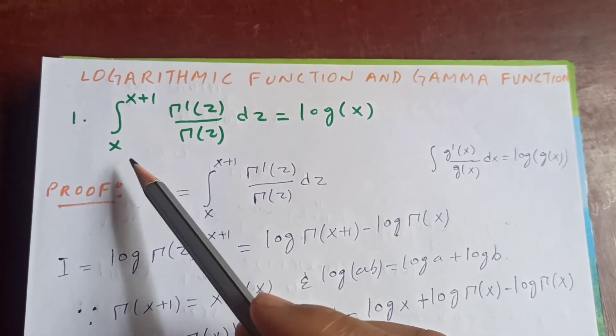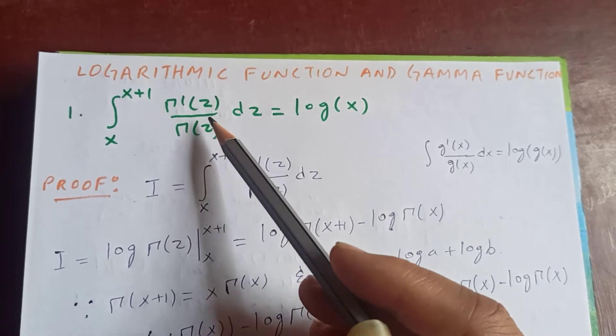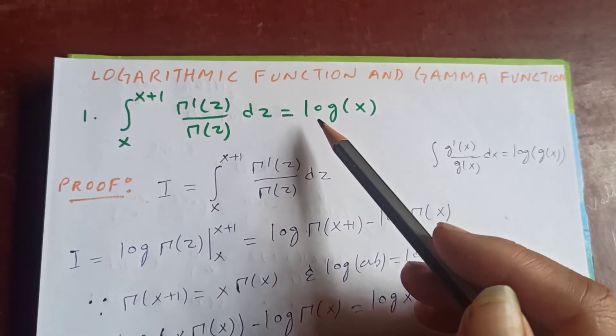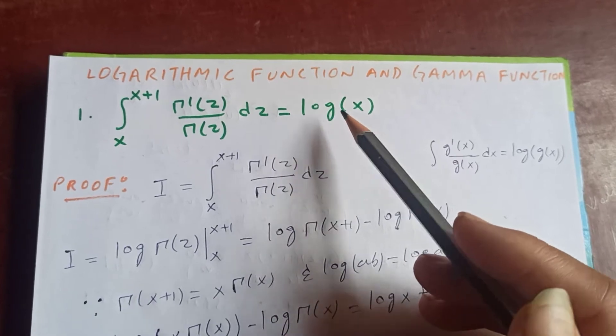Now number 1, the integral from x to x plus 1 of gamma prime of z upon gamma z dz is equal to log x.